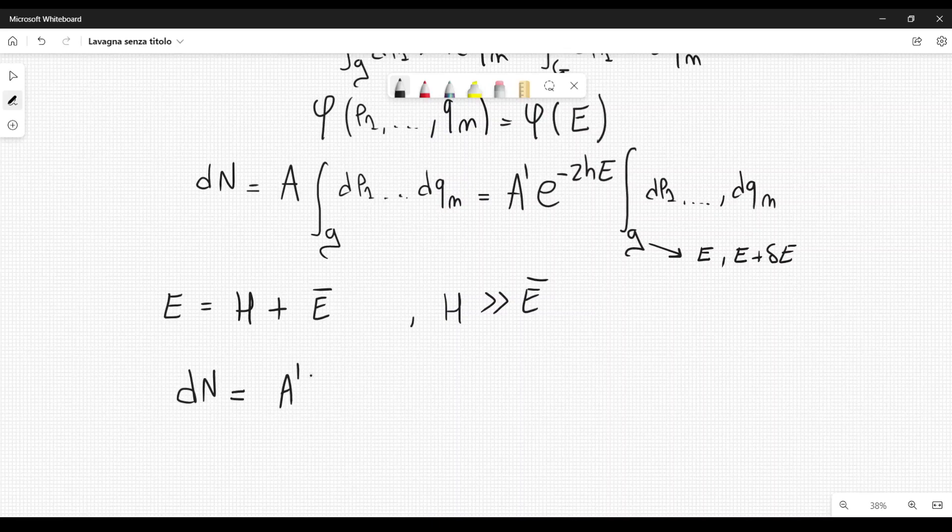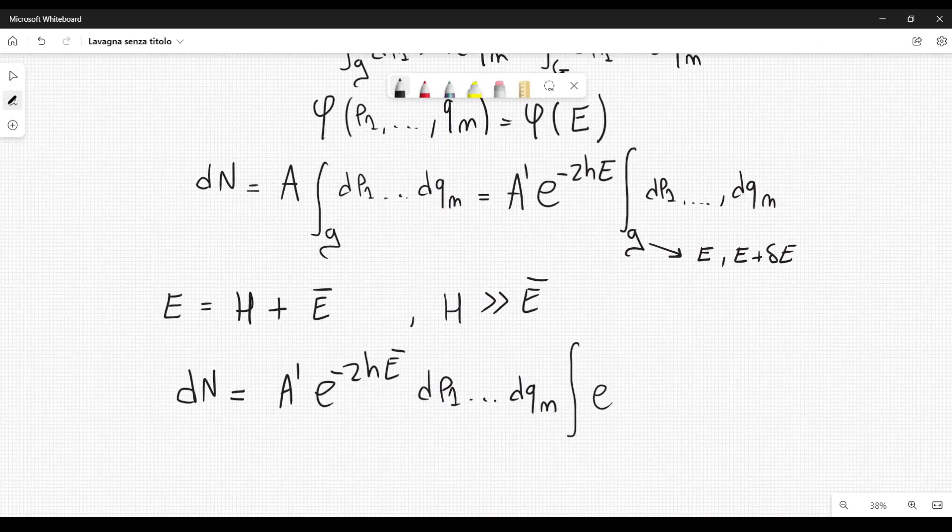dN is equal to A prime e to the minus 2H E bar for the first system. Then I have dP1 dot dot dot dQn. And in this case I'm not considering the integral sign, this is a very small region. Also the second system is a small region. And then Einstein integrates e to the minus 2H lowercase h times uppercase H, where in this case this one is the energy, this one is the constant, lowercase h. Then I have other coordinates.